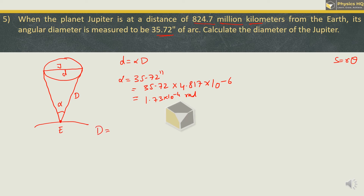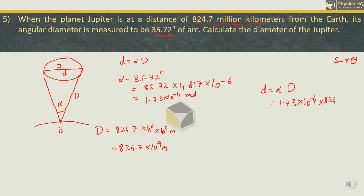Putting values into D = α × d: D = 1.73 × 10⁻⁴ × 824.7 × 10⁹. Using a log book to multiply, we get D = 1.428 × 10⁸ m, which can also be expressed as 1.428 × 10⁵ km.